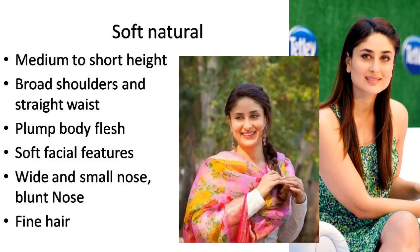Next is Soft Natural. Your height is medium to short. Your shoulders are broad and your waistline is straight — not curved or only slightly curved. Your body is plumper with wide lines but still has plump body flesh. Your facial features are very soft. Your nose will be small but wide and blunt, not sharp. Your hair will be fine.